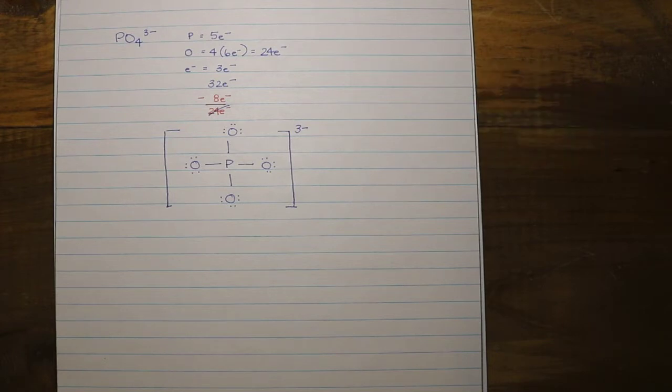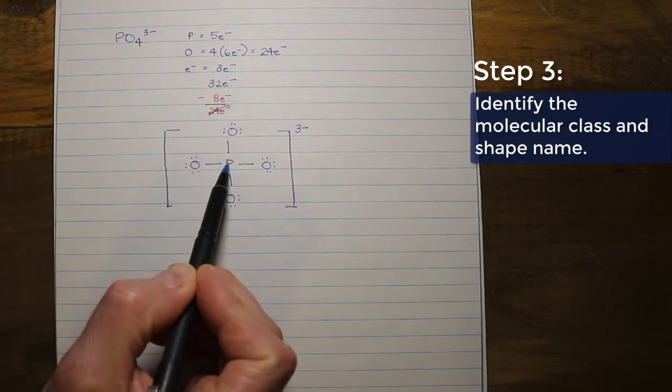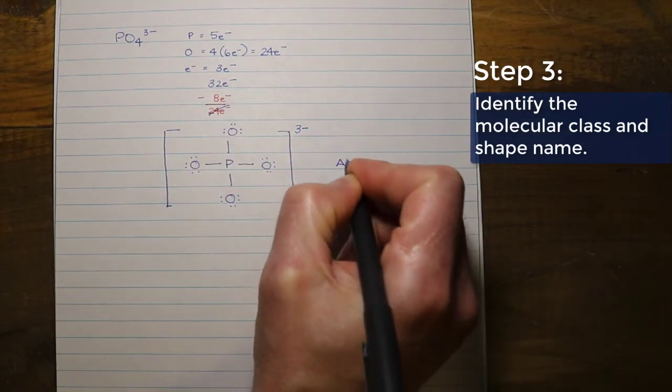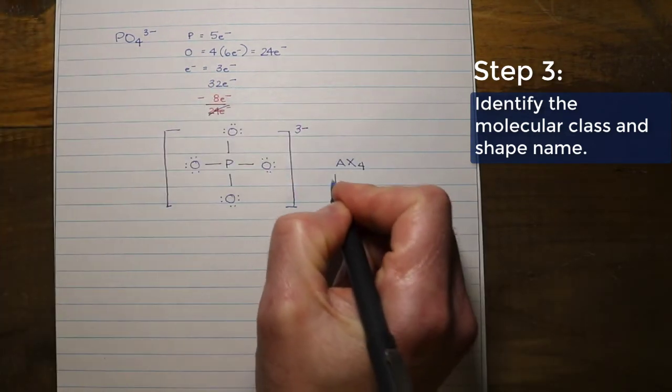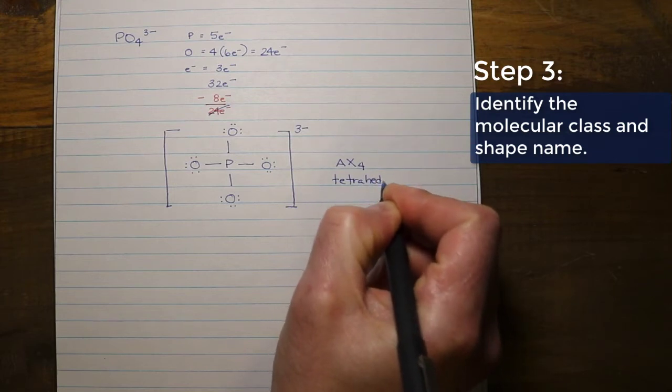So now what we have to do is if we are going to represent this in its three-dimensional structure, we have to first recognize what its molecular class is. What I have here is an A, central atom, X, the peripheral atom, 4. So my molecular class is an AX4. If you're just first learning the molecular classes and their shapes, you could look this up, but I know that an AX4 is tetrahedral.